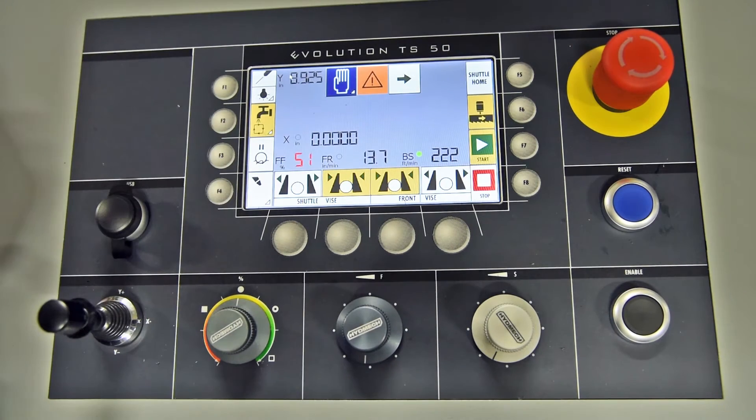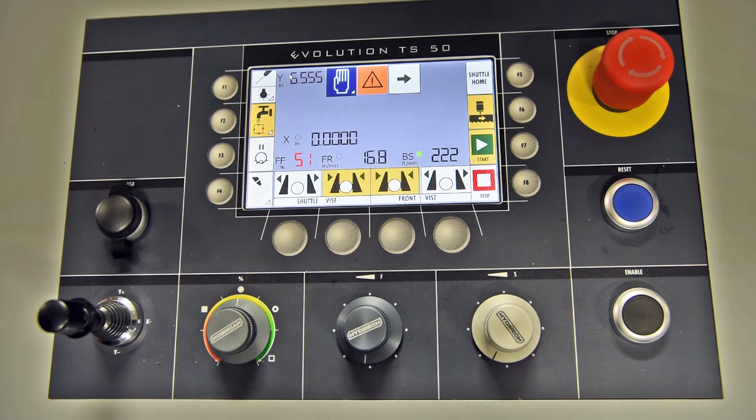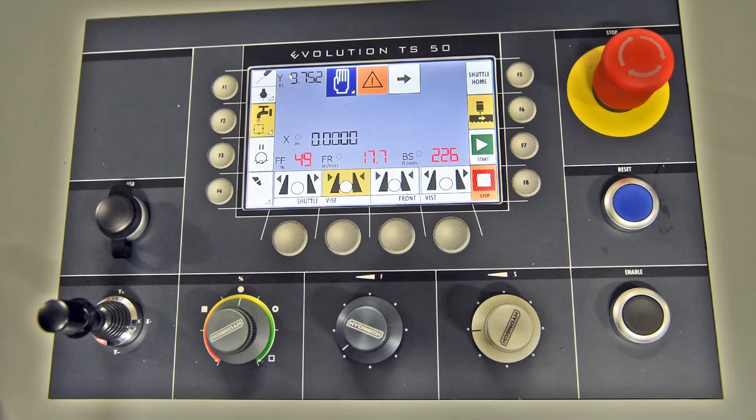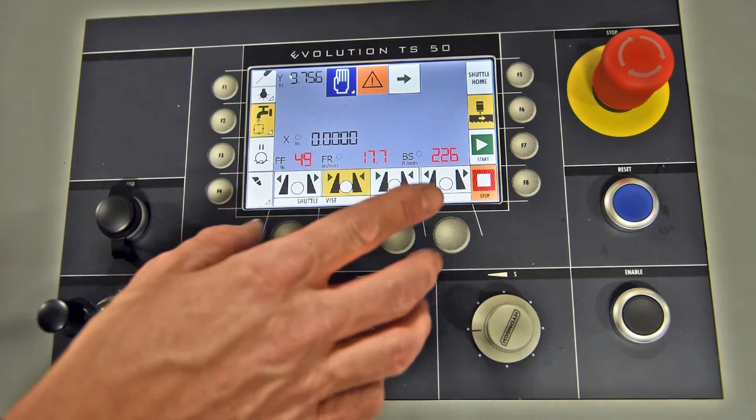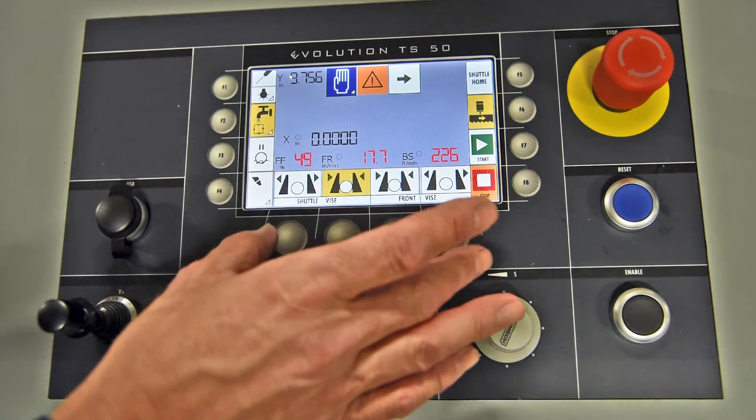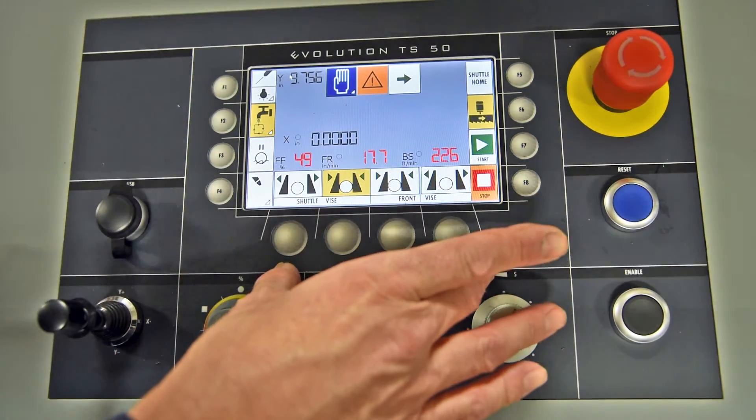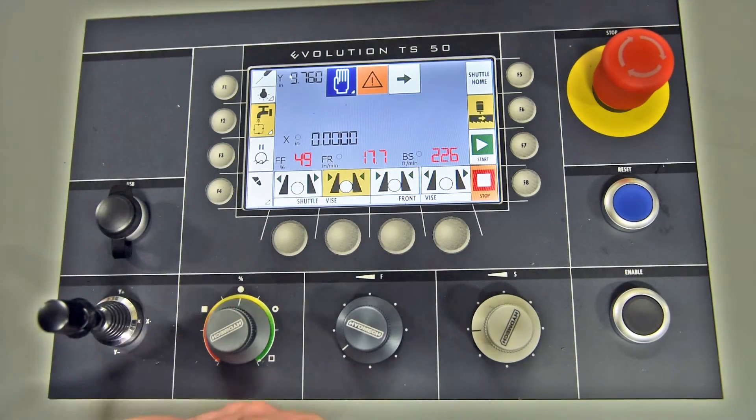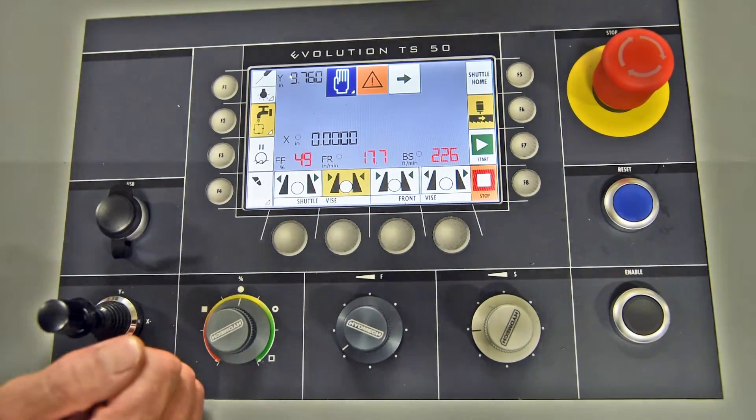And then for auto cycle, as the blade is running, we'll have the square with the arrows on it. Once the manual cycle is done, the machine will raise the head to its upper limit, stop the blade, stop the coolant, stop the cycle.